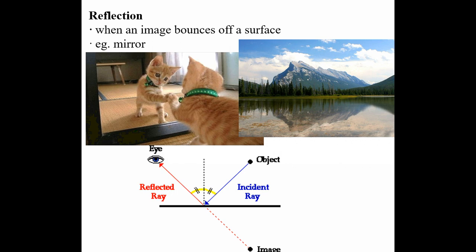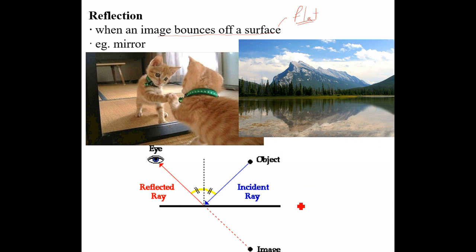Reflection is relatively straightforward — we're talking about an image bouncing off some sort of reflective surface. The examples I'm showing here are flat surfaces: a cat looking in a mirror, which is a flat surface, and Mount Rundle near Banff reflecting off the flat horizontal surface of the water. That dark band going across the picture is our flat surface.